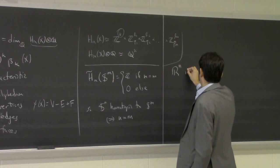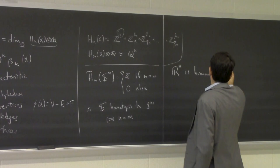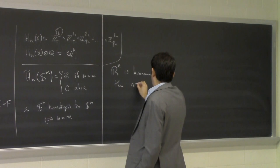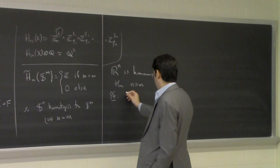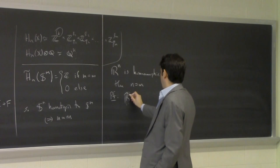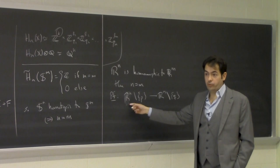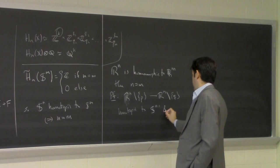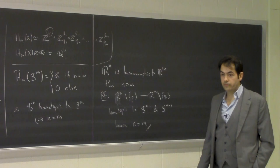If R^n is homeomorphic to R^m, then n = m. Note we can't say homotopic since they're all contractible. But if they were homeomorphic, then R^n minus a point would be homeomorphic to R^m minus a point. These are homotopic to S^{n-1} and S^{m-1} respectively, so n must equal m.